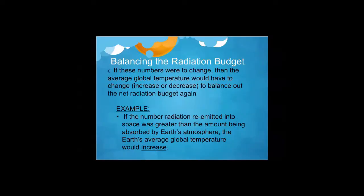Balancing the radiation budget: if the incoming radiation and the outgoing radiation numbers were to change, then the average global temperature would have to change — either increasing or decreasing to balance out the net radiation budget again and become zero. For example, if the amount of radiation re-emitted into space was greater than the amount being absorbed by the Earth's atmosphere, the Earth's average global temperature would increase.